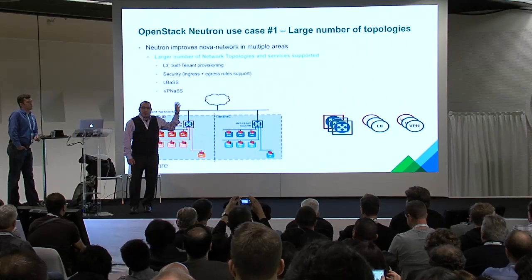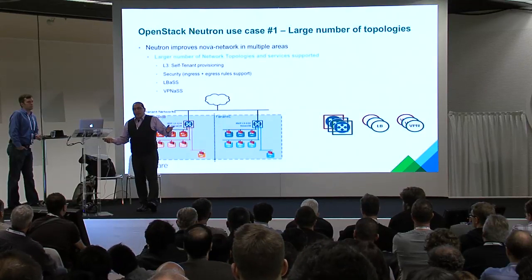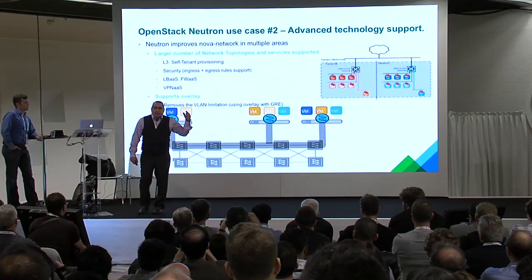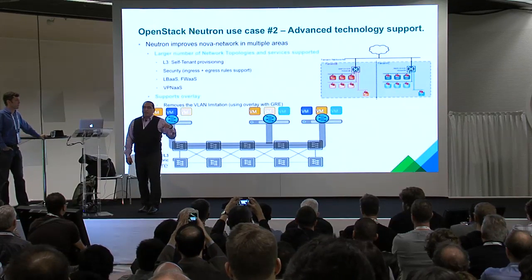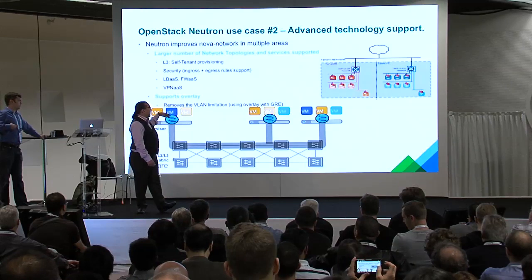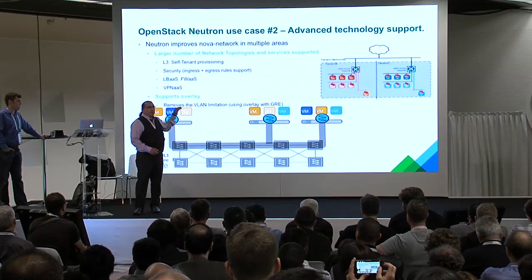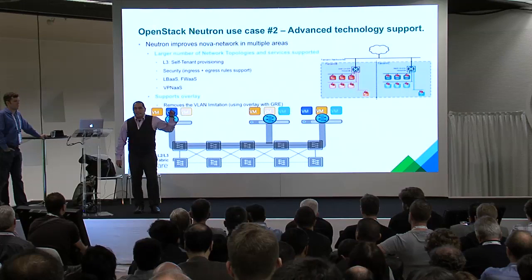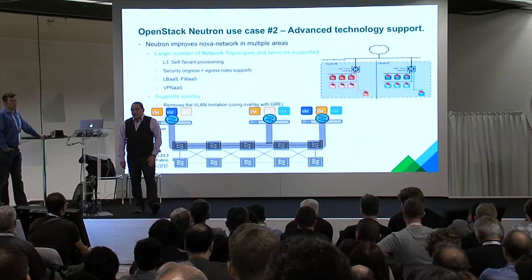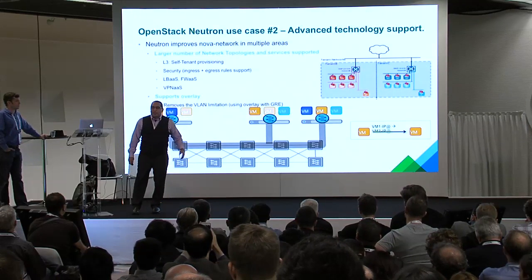We support overlay networks — instead of doing VLAN-type isolation, you now have the ability to do L2 over L3 type networks. You can use GRE, VXLAN, and any other tunneling protocol possible. This removes one of the major limitations of VLANs, which is the 4096 address space limit. Now you have IP connectivity over this overlay network, so from one hypervisor to another it uses this overlay to communicate and looks like it's L2 adjacent.